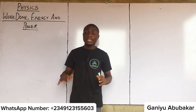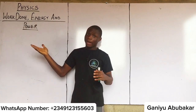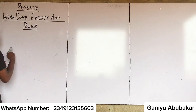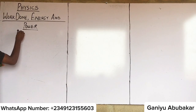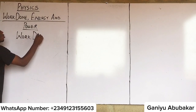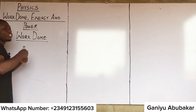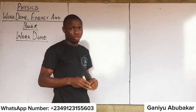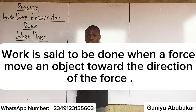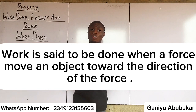For this class we're discussing work done only; in our last two classes we talked about energy and power. Let's have the first concept called work done — also simply called work. Work is said to be done when a force moves an object towards the direction of that force.